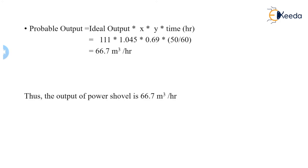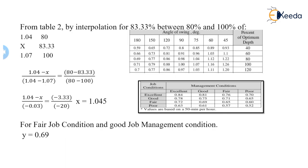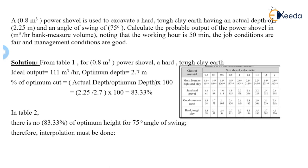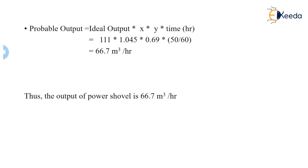Now we will find the probable output as the ideal output into x into y into time in hours. We have calculated x as 1.05 and we have got the value of y as 0.69. We know the ideal output as 111 and the time is given, the working time is given as 50. It is given as 50 minutes, so we have to convert it into hours, that is 50 upon 60. We will get the value as 66.7 meter cube per hour. The final answer is the output of the power shovel is 66.7 meter cube per hour.